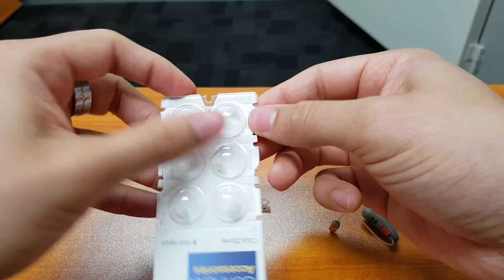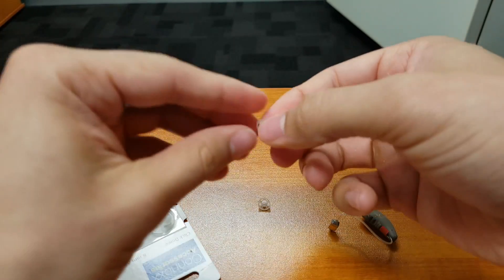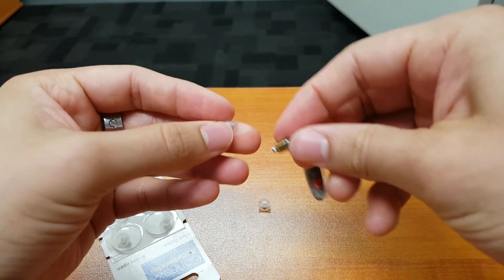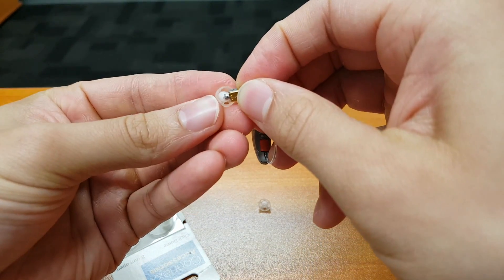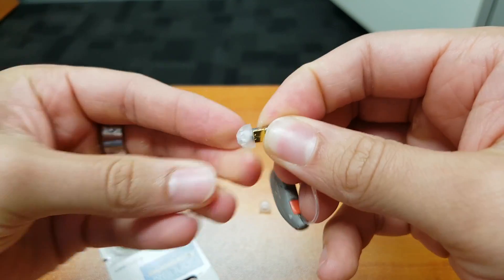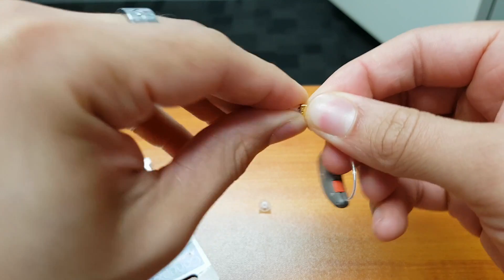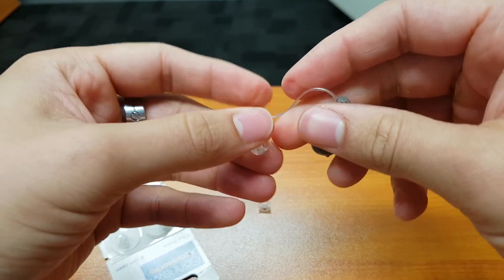And what we'll do is grab a new dome and we'll just line that up like so and click that into place. We give that a firm pull, that's not going anywhere, so it's nice and secure.